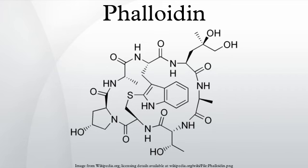Phalloidin is a bicyclic heptapeptide containing an unusual serine-tryptophan linkage. The gene coding for synthesis of phalloidin is part of the MSDIN family in the death cap mushroom and codes for a 34–39 amino acid propeptide. A proline residue flanks the seven-residue region that will later become phalloidin.